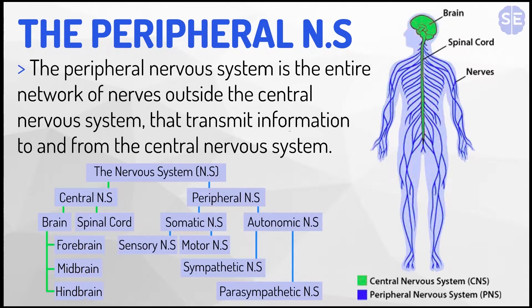The peripheral nervous system is the entire network of nerves outside the central nervous system that transmit information to and from the central nervous system. And you can see here in this diagram how they connect and how they can transfer information between one another.